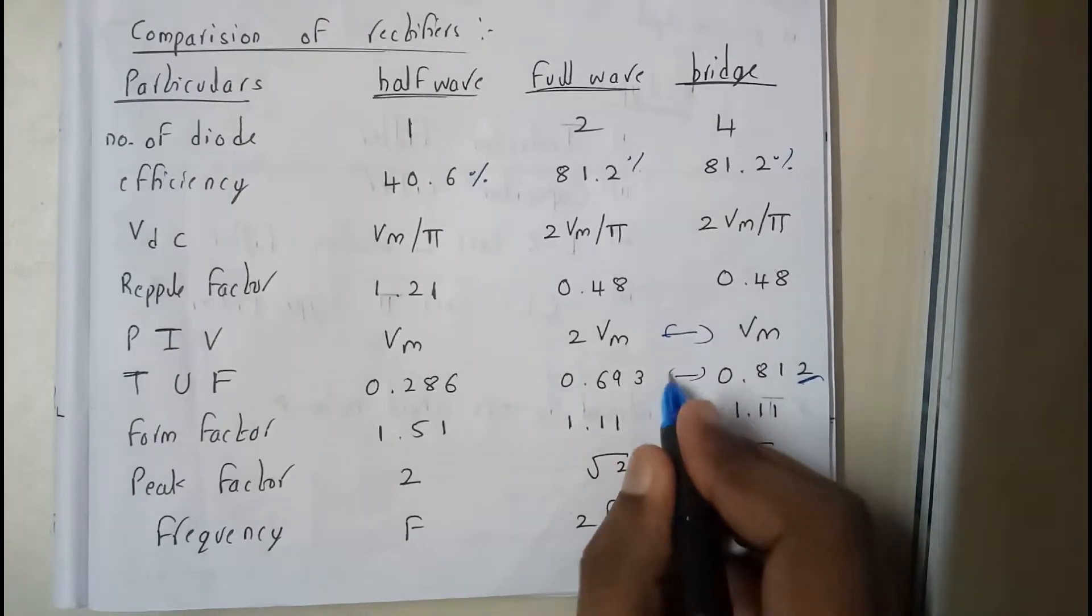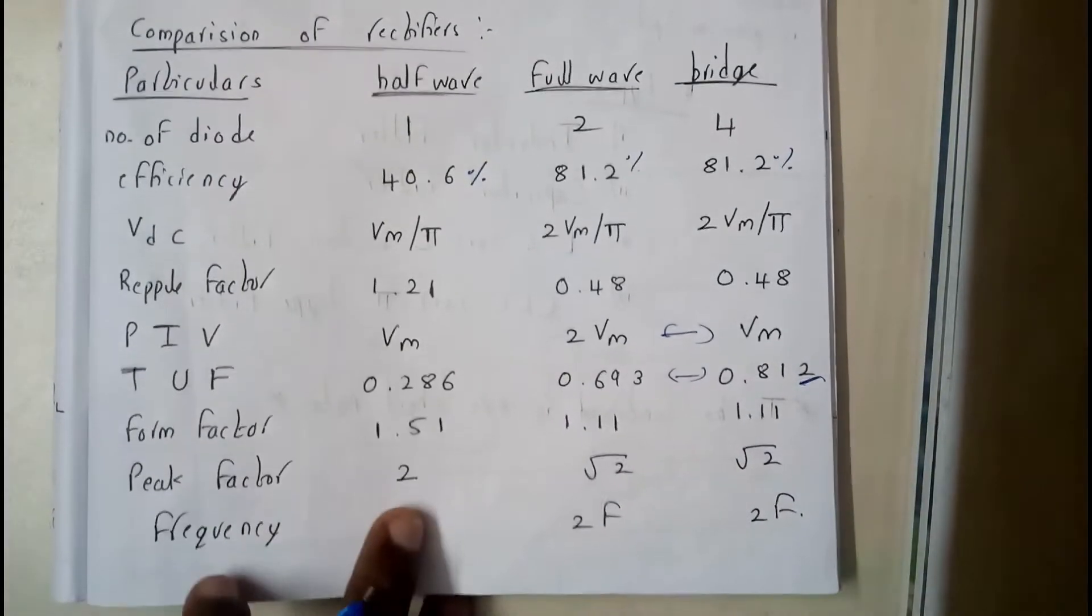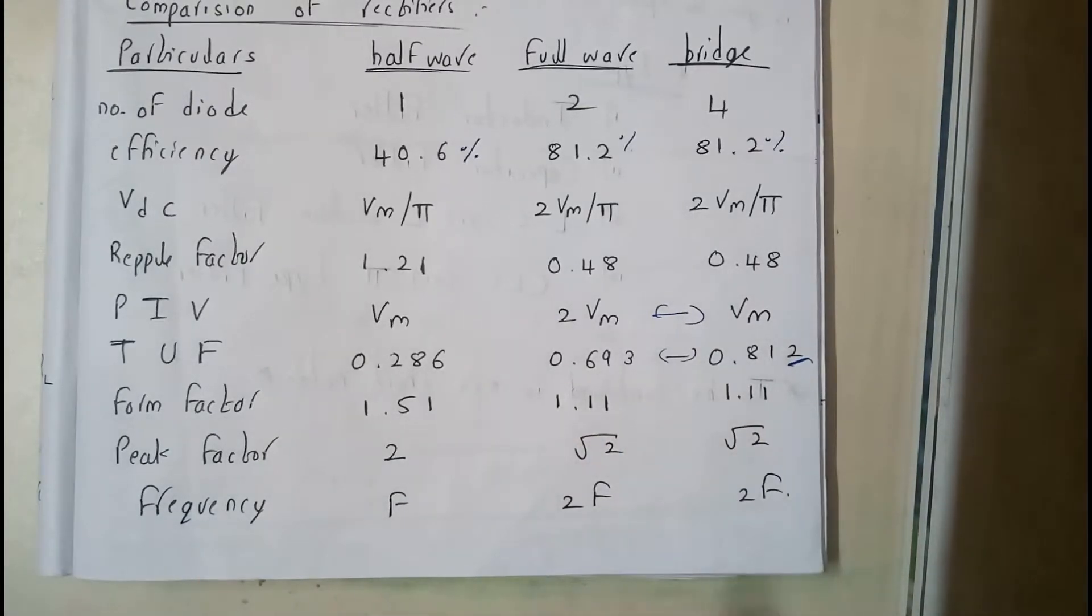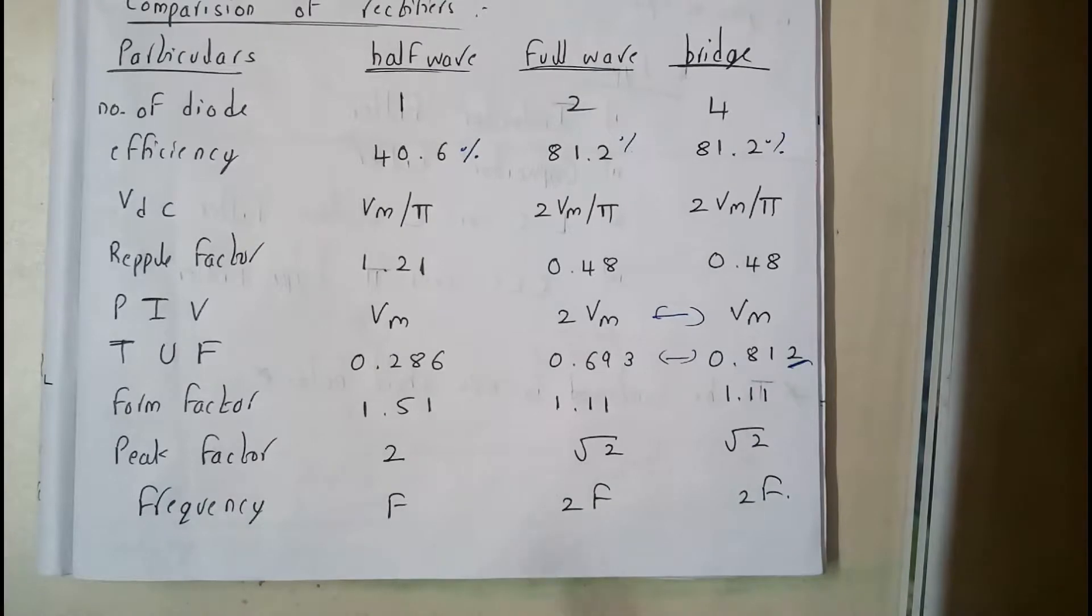0.698, 0.812 - this is also a change. Form factor: 1.51, 1.11, 1.11. Peak factor: 2, √2, √2. Frequency: F, 2F, 2F.